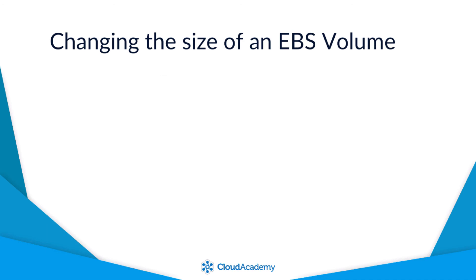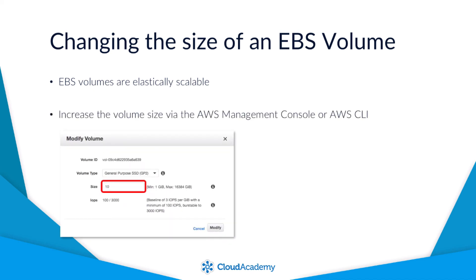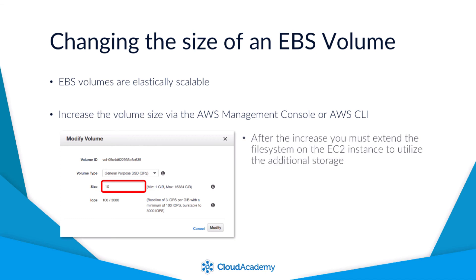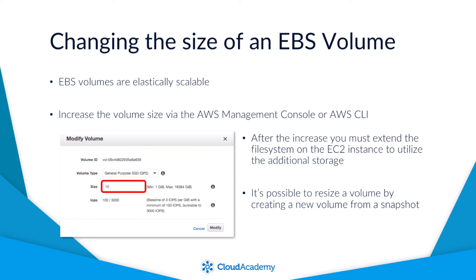EBS volumes also offer the additional flexibility of being able to resize them elastically should the requirement arise. Perhaps you are running out of disk space and need to scale up your volume. This can be achieved by modifying the volume within the console or via the AWS CLI. Once the volume has been increased, you would then need to extend the file system on the OS of the EC2 instance to see the new volume size. You could also perform the same resize by creating a snapshot of your existing volume and then creating a new volume from that snapshot with an increased capacity size.